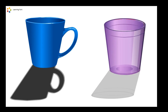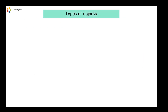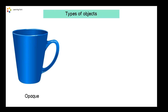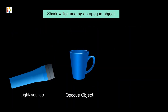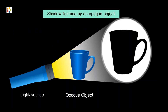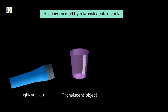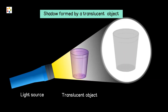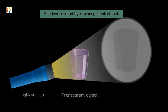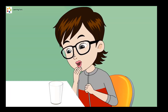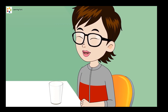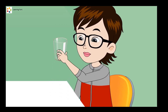The clarity of a shadow depends on the type of object that light passes through. There are three types of objects: opaque, translucent, and transparent. When light strikes an opaque object, it forms a dark shadow. When light strikes a translucent object, it forms a faint shadow. When light strikes a transparent object, no shadow is formed. Now Lana understands why her glass does not form a shadow — it is because her glass is transparent.